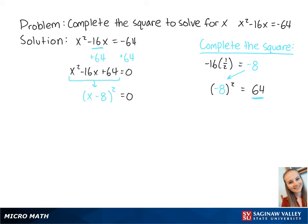Since the binomial is equal to 0, we now have x minus 8 equals 0. When we add 8 to both sides of the equation, we get x equals 8. And this is the final answer.